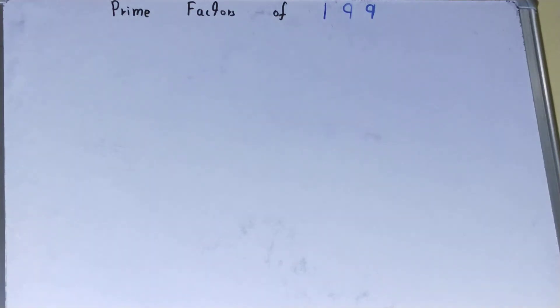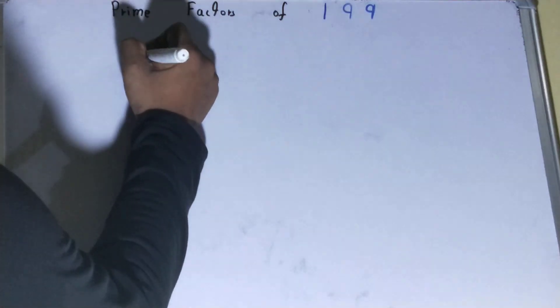If we talk about the number 199, it is a prime number, so we can clearly say that the prime factors of 199 is the number itself. But still, if you want to show it in an exam, then you can write it like this.